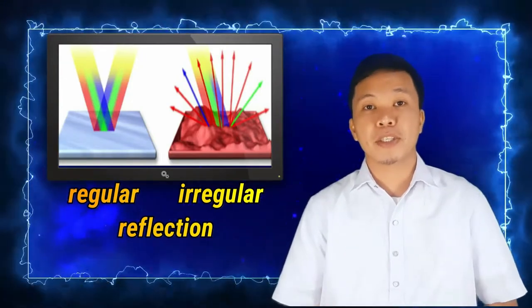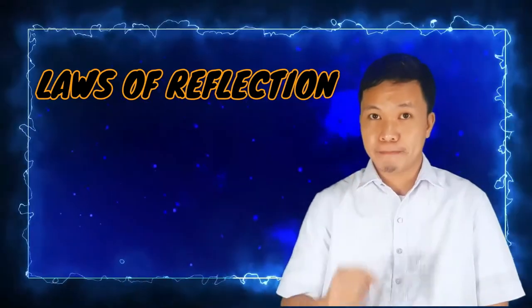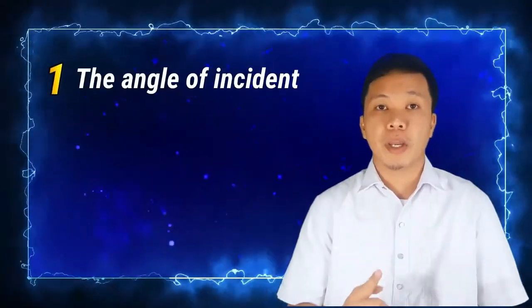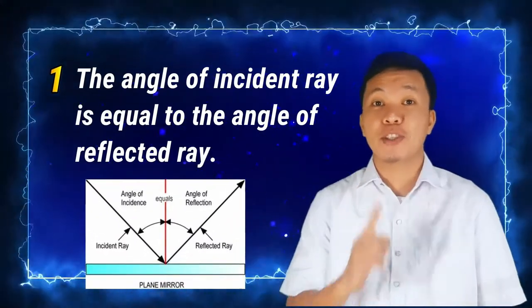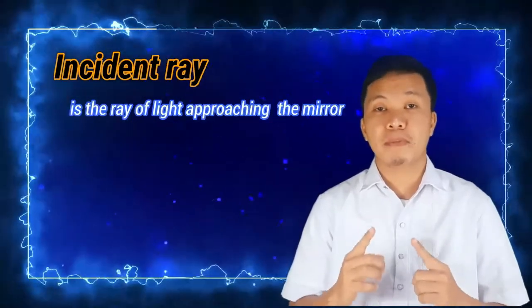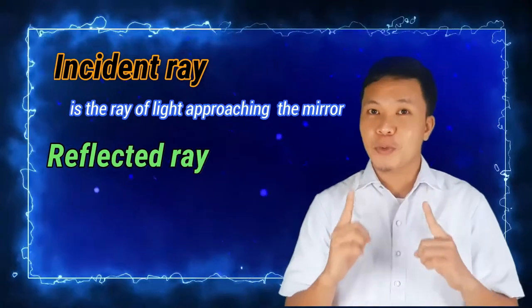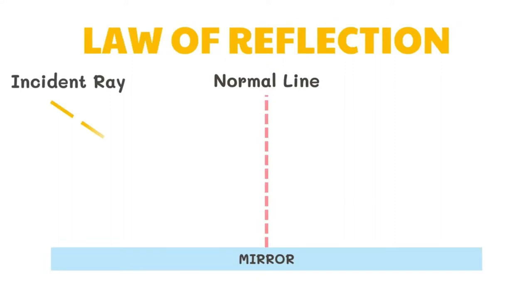Now this time, let us discuss the two laws of reflection. The first one: the angle of incident ray is equal to the angle of reflected ray. Now let us define first the incident ray. What is an incident ray? Incident ray is the ray of light approaching the mirror. And the reflected ray is the ray of light which leaves the mirror.